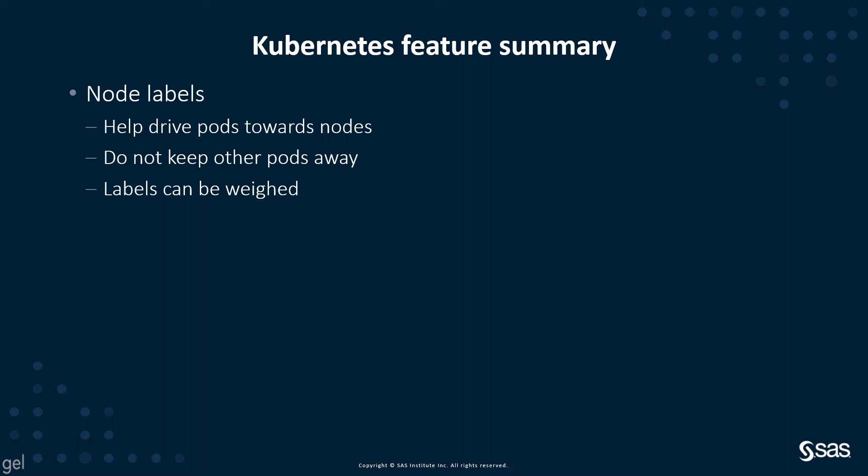In our last video, we saw that we had some nodes labeled — for example, with a stateful or stateless label. Having the stateless label on the node does not stop other Viya pods or any other pod from going there. And finally, these labels can have weights.